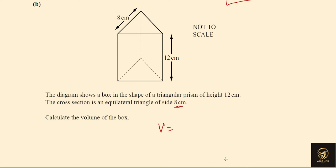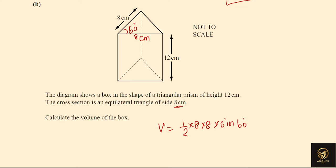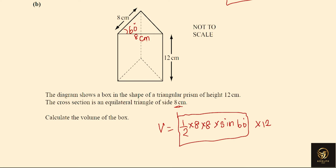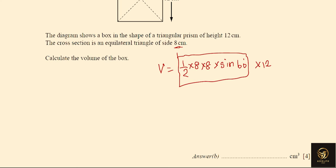Volume of a prism = base area × height. The base is an equilateral triangle with a 60° interior angle and sides of 8 cm. Area = ½ × a × b × sin C = ½ × 8 × 8 × sin 60°. Multiplying by the height of 12 gives approximately 332.55, which rounds to 333 cm³ to three significant figures — the standard for IGCSE.